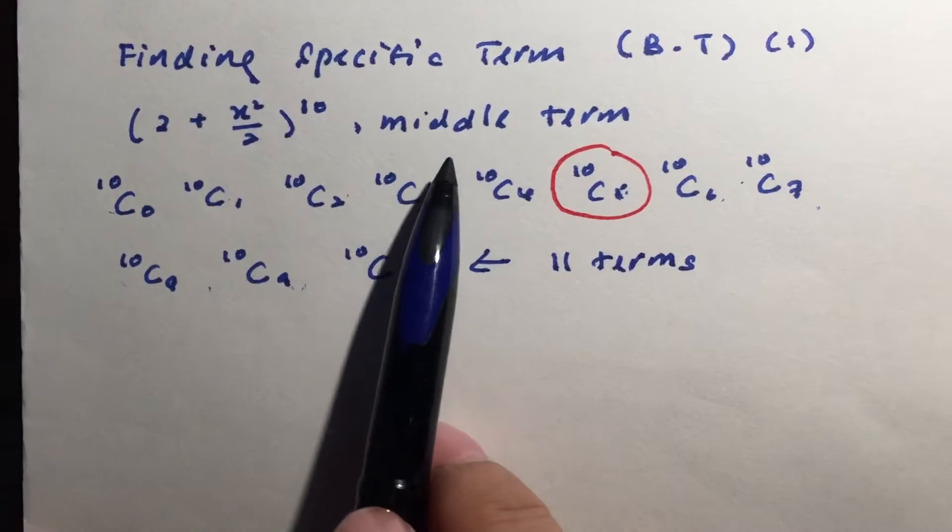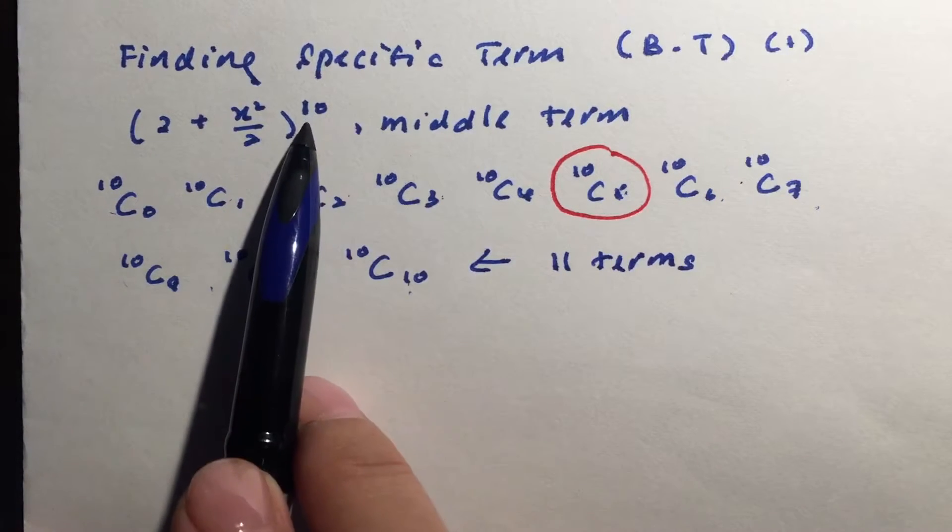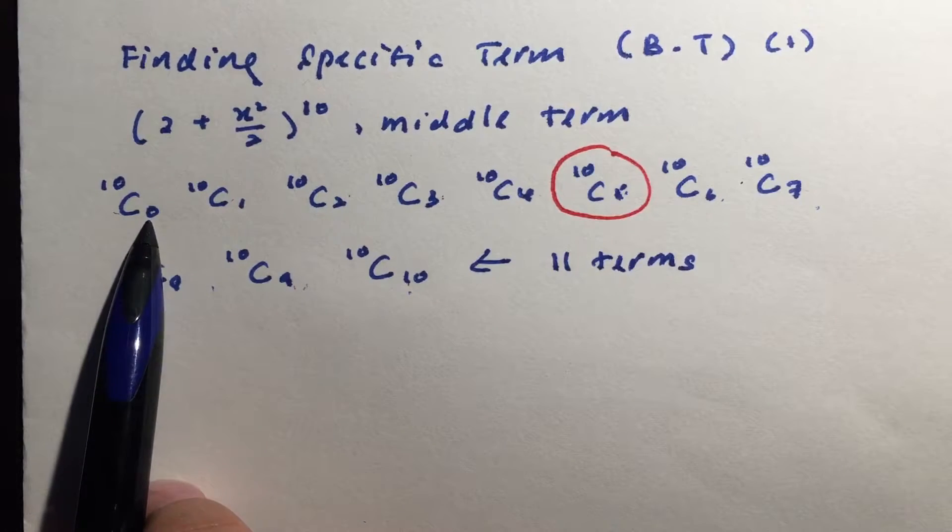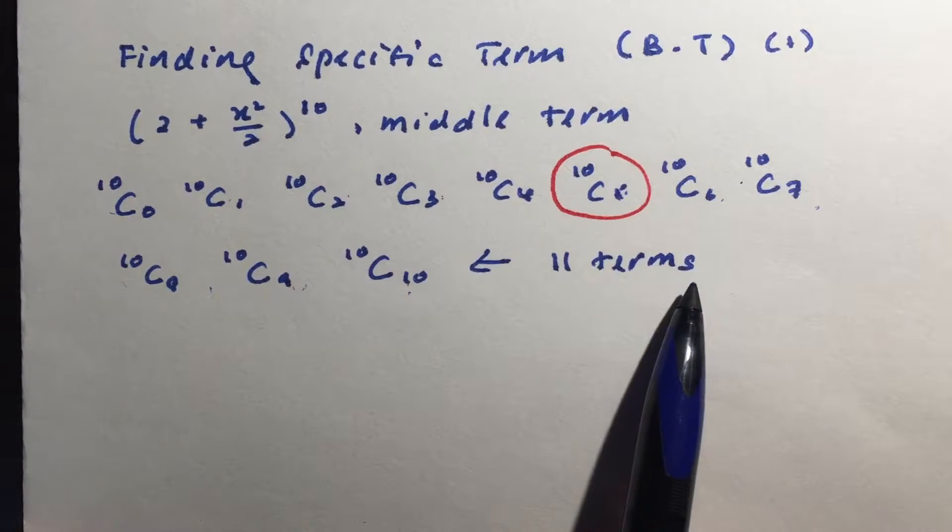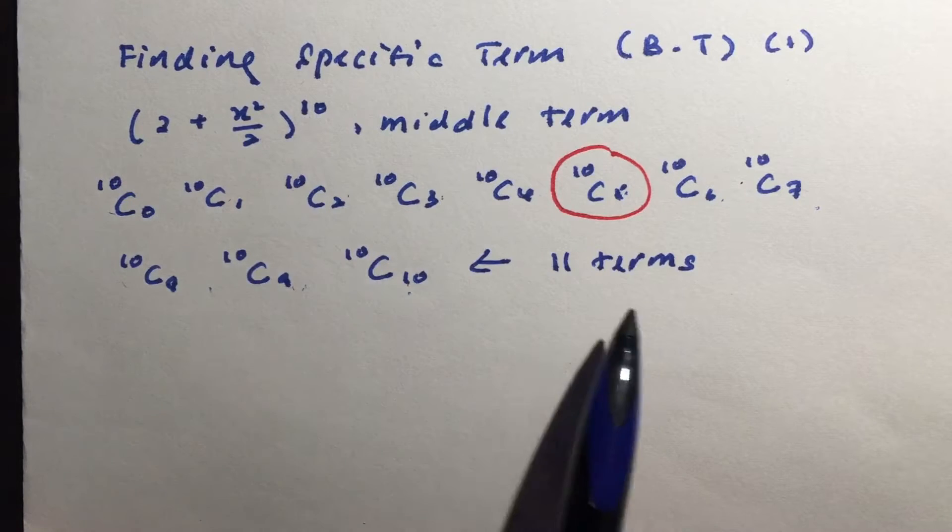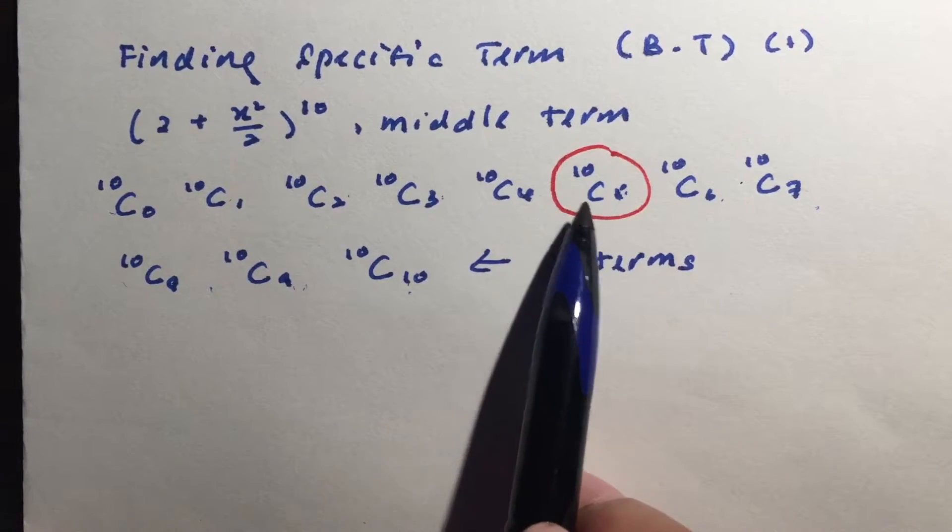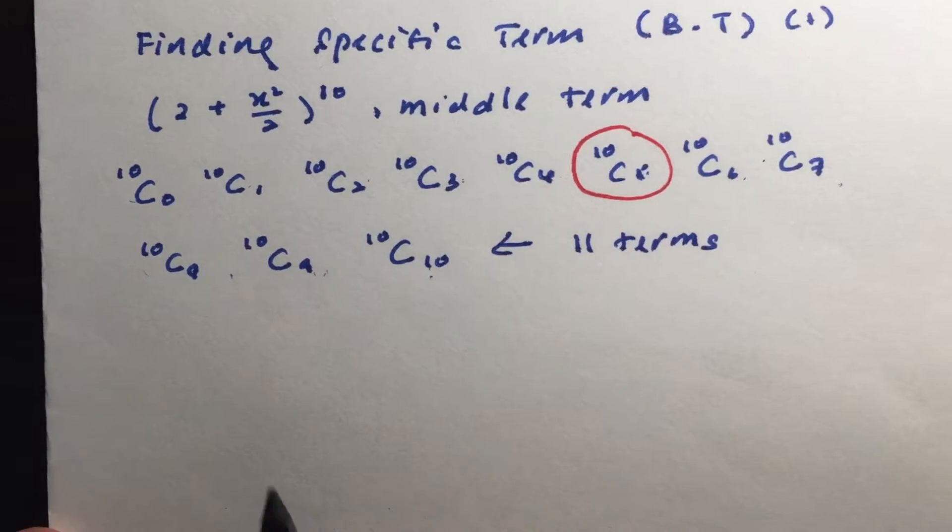So you will realize that if a question asks you for the middle term, it must be that it will be an even power here. Because of the choose 0, you will have an extra term here. So even powers, you will have an odd number of terms. Now that we know that it's going to be a term starting with 10 choose 5, it's going to make it very easy for us.